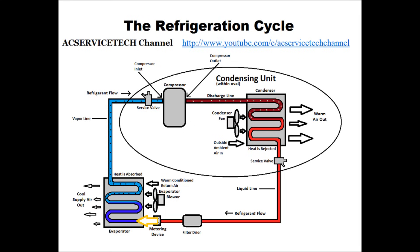Until it gets to the middle of the evaporator coil, the refrigerant is actually absorbing heat. As it absorbs enough heat, it turns into that saturated state in the middle of the evaporator coil, where most of the energy absorption is taking place. Right after that is where it turns into a low pressure, low temperature vapor. Right after the saturated state it turns into that low pressure, low temperature vapor, and until it comes out of the evaporator coil it's still absorbing heat.